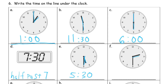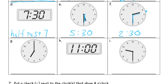Here the hour hand — the short hand that doesn't go all the way to the numbers — is in between the 2 and the 3, which means it's still 2 o'clock, and the minute hand tells us it's 30 minutes after 2 o'clock, so it's 2:30. The next clock has the hour hand pointing right at the 7. This can be tricky later on, but here the hour hand is right at the 7 and the minute hand points straight up to the 12, so that's 7 o'clock.